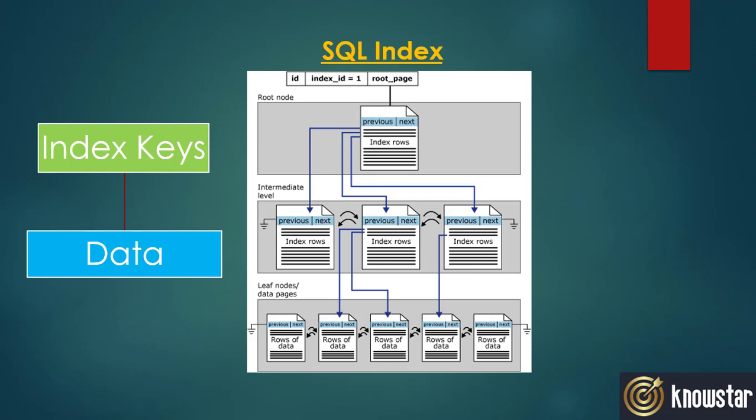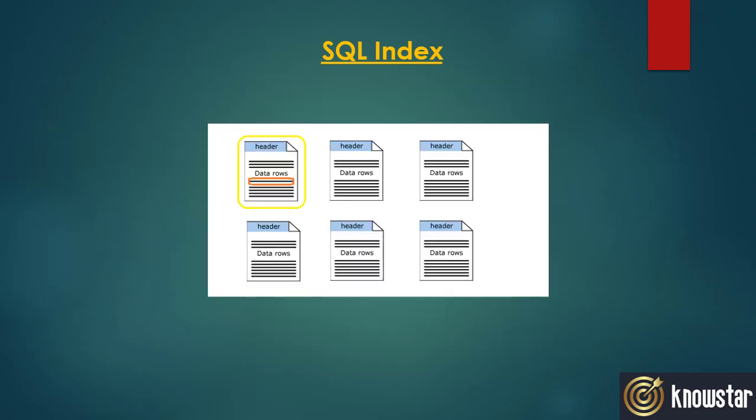Since the data is physically sorted, all the matching records will be stored adjacent to each other. The search will start from the first record and continue till the last match is found, so the table scan knows when to exit. Since the data is physically sorted on the index keys, there is a limitation of only one clustered index per table, as the data can only be physically sorted in one way.